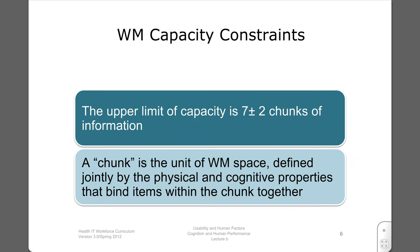The famous seven plus or minus two chunks of information is the capacity of working memory — a useful fact to consider in a design process. However, it has been misinterpreted by some members of the design community. For example, some have taken it to mean that a menu can be no longer than seven items. The answer is that you don't have to keep those items in working memory — they are permanently available to you on the display. A chunk can be any meaningful unit that shares certain properties.